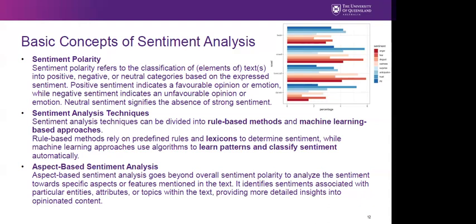There is also aspect-based sentiment analysis, which goes beyond overall sentiment polarity to analyze sentiment towards specific aspects or features mentioned in a text. These approaches identify sentiments associated with particular entities, attributes, or topics, and provide more detailed insights into opinionated content. For example, you could extract every mention of a certain person or entity and then look at the sentiment in the surrounding context, giving a more detailed analysis of how that entity is viewed rather than analyzing the entire text.